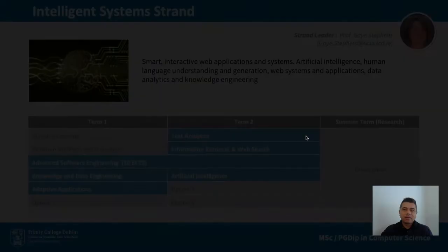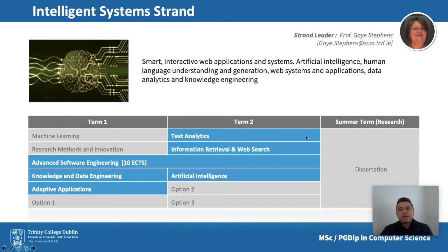The intelligent systems strand focuses on smart, interactive web applications and systems becoming integral in our daily lives — at work, at home, and in social interactions such as social media. Designing and building such systems requires expertise in areas such as artificial intelligence, human language understanding, human language generation, web systems and applications, data analytics, and knowledge engineering. This strand is closely related to the research and themes of the National Research Center ADAPT, the Center for Digital Content Technology.